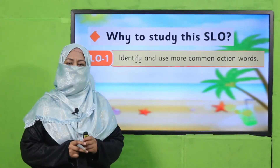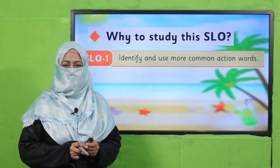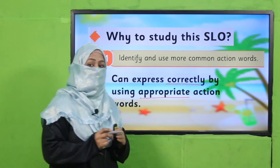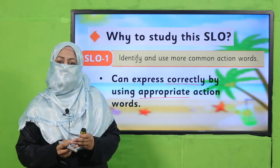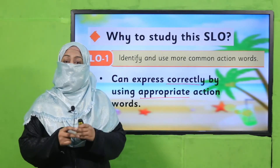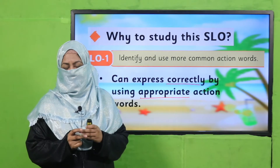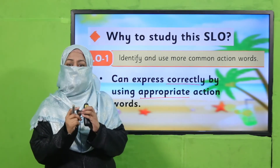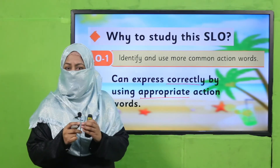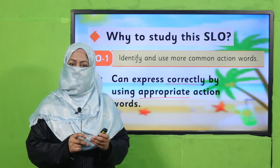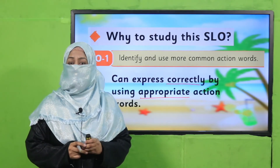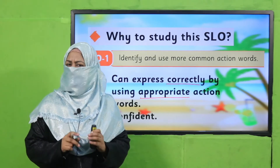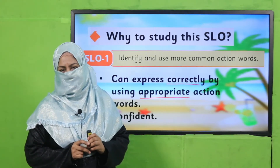Specifically, practically speaking, bachche correct aur appropriate action words bol kar bata sakte hain ke hum kya kar rahe hain. Agar aap kehte hain apne bachche ko ke jayye dekho, chota bhai ya choti behen kya kar rahi hai, to they have to describe it — they have to answer it by using action words. Is tarah se unke paas apni practical life mein express karne ke liye behtar words hote hain, aur wo correctly aapke question ka jawab de sakti hain.